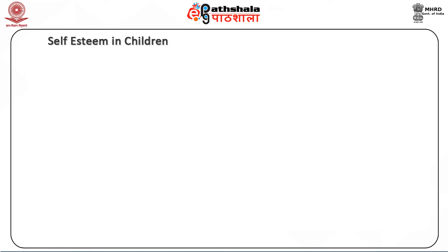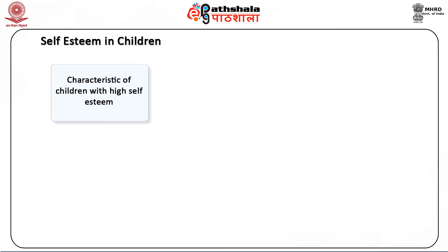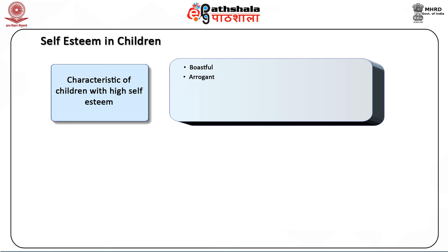Self-esteem in children becomes more distinct as they grow and may vary among different domains. For example, a child may have high academic self-esteem but lower physical self-esteem, or vice versa. Characteristics of children with very high self-esteem include being boastful or arrogant, experiencing school success, feeling happy and satisfied, making healthy choices, and demonstrating effective coping skills.